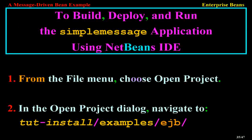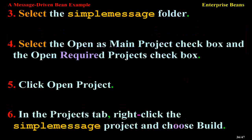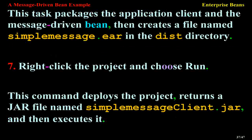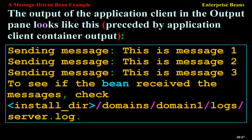To build, deploy, and run the simple message application using NetBeans IDE: from the File menu, choose Open Project. In the Open Project dialog, navigate to TUT install examples EJB, and select the simple-message folder. Select the Open as Main Project and Open Required Projects checkboxes, then click Open Project. In the Projects tab, right-click the simple-message project and choose Build. This packages the application client and the message-driven bean, then creates a file named simple-message.ear in the dist directory. Right-click the project and choose Run — this deploys the project and executes the application client.